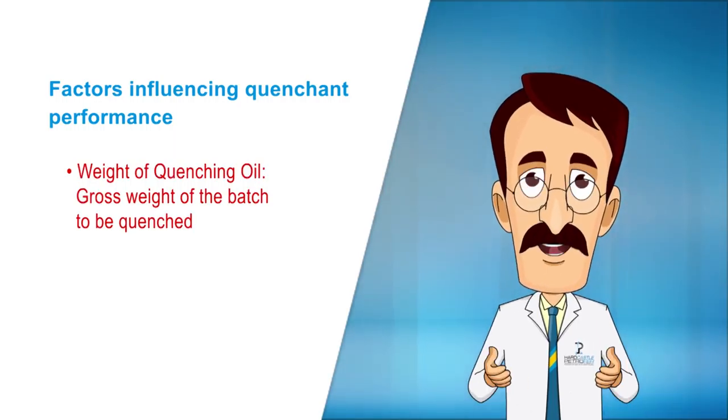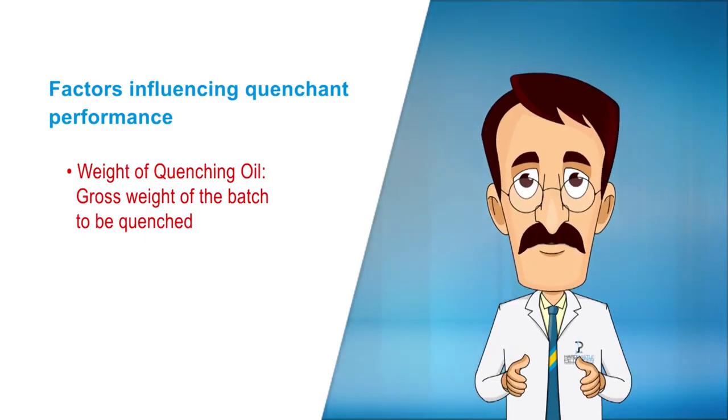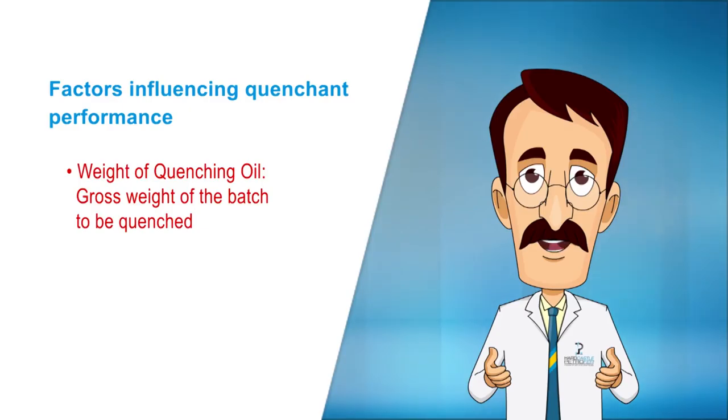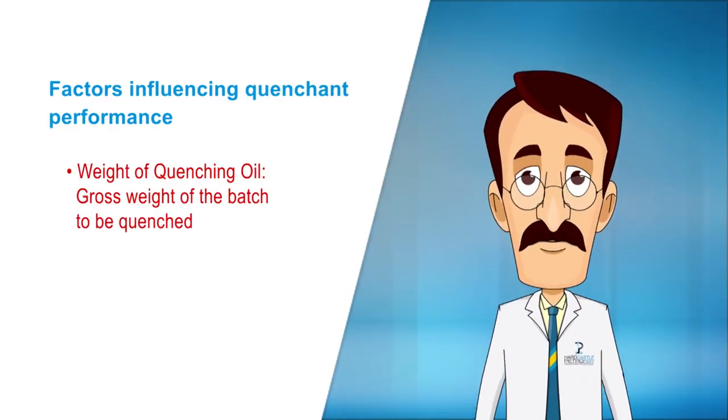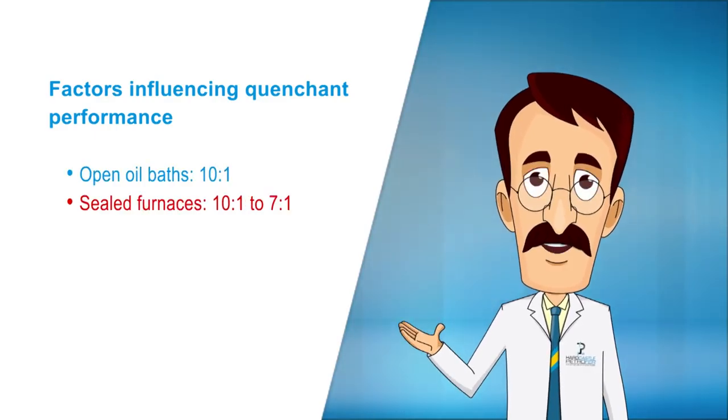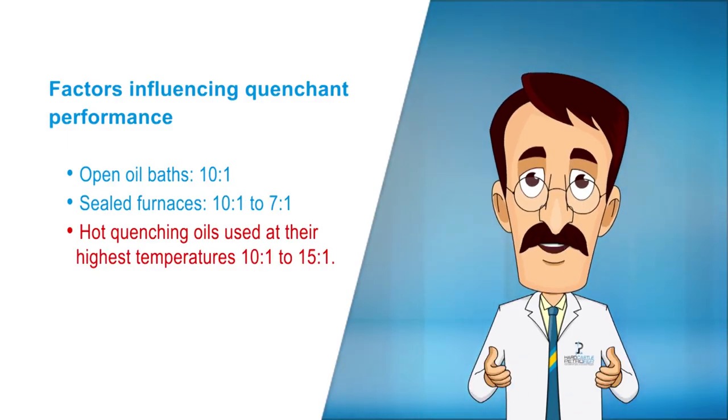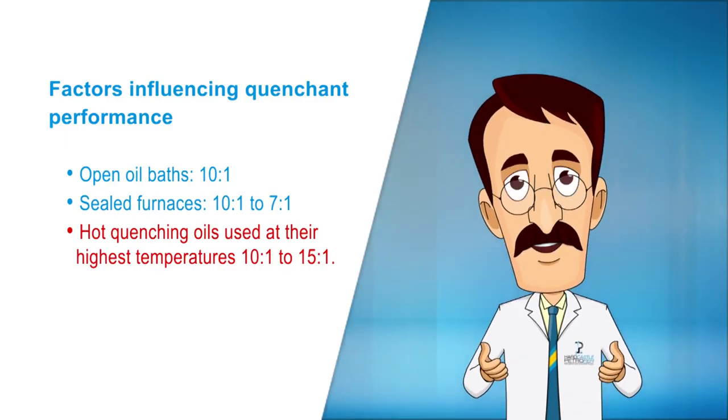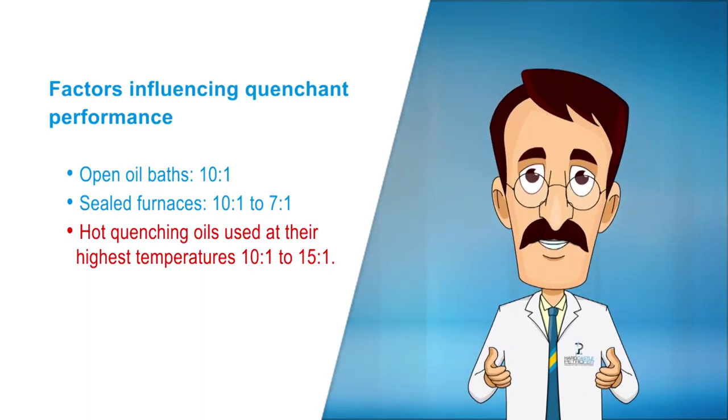Consequently, the following values can be used as a guide to the relationship between the weight of quenching oil and the gross weight of the batch to be quenched. Open oil baths 10 is to 1, sealed furnaces 10 is to 1 to 7 is to 1, hot quenching oils used at their highest temperatures 10 is to 1 to 15 is to 1.